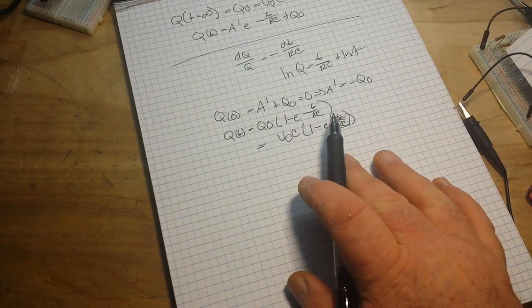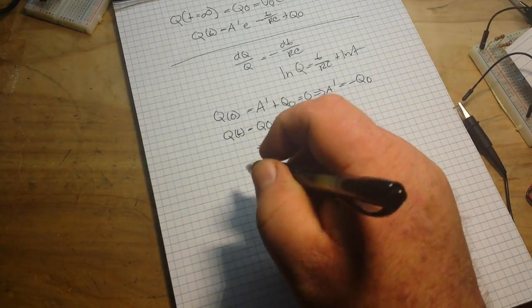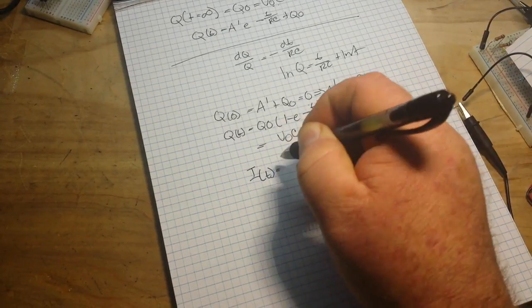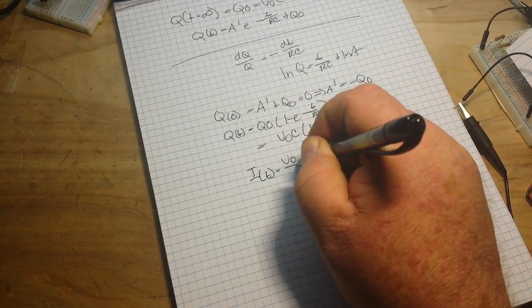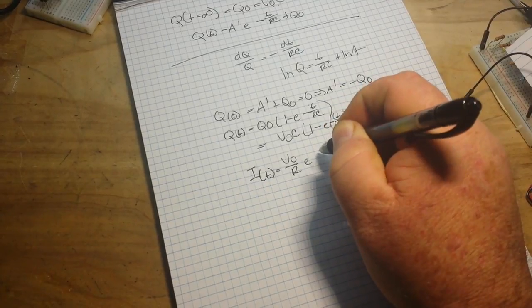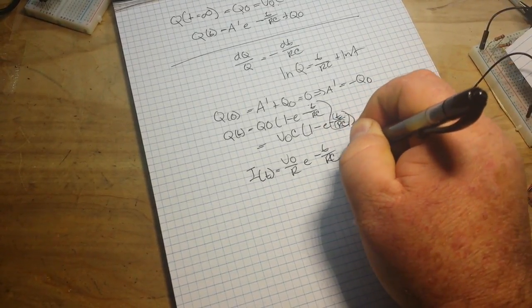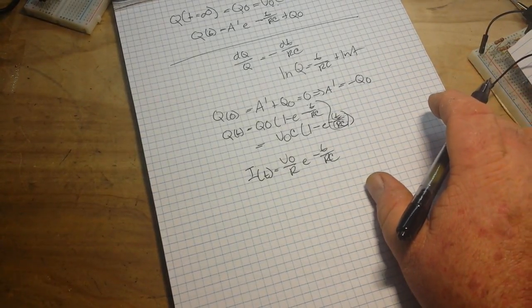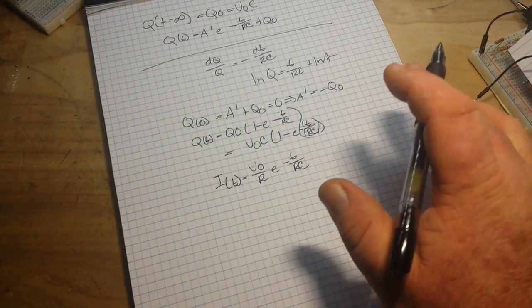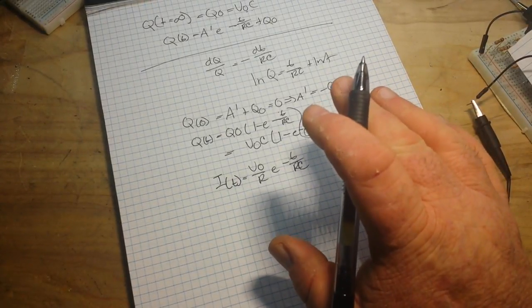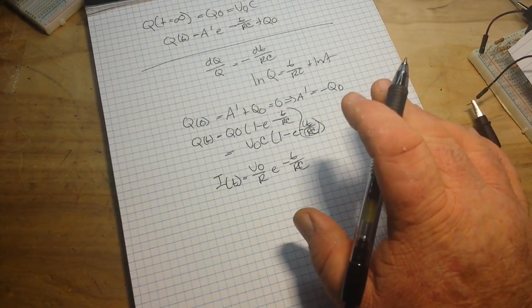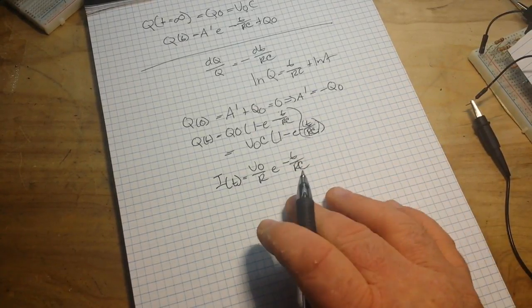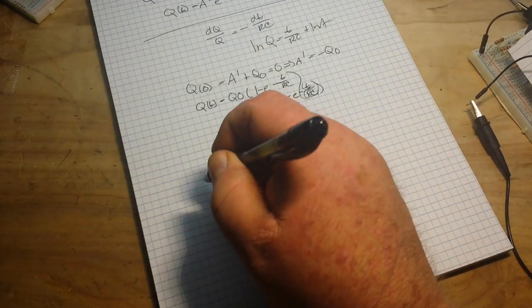So once we have all of this information, we can calculate the current. We can say that the current at T is equal to V zero over R E minus T over RC. Or the discharge version of it would be basically the current at T equals V0 over, it's basically the same thing. We're just swapping it back and forth. And it's pretty easy to see in a graph form.